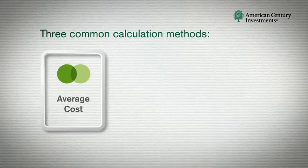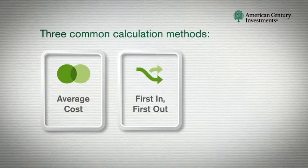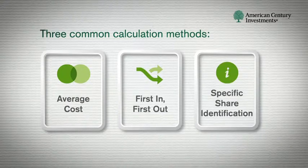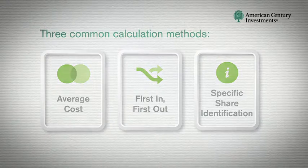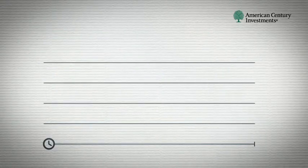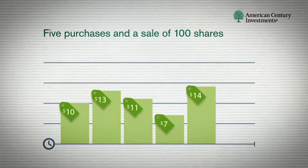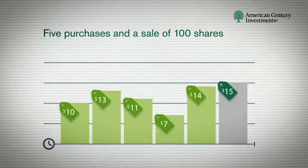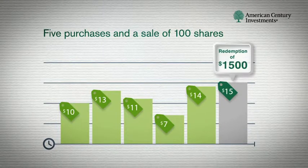Let's look at three common options: average cost, first in first out, and specific share identification. For each example, we'll use the same hypothetical scenario using five purchases and a sale of 100 shares, giving us a total of $1,500 redeemed.